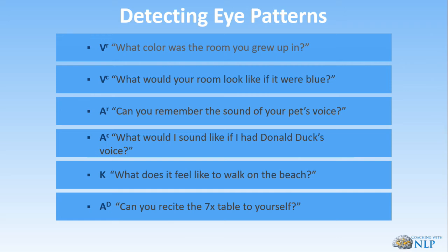They actually tried to debunk the eye patterns. They were at the Pentagon and asked generals: 'What was the color of the room that you grew up in?' The generals actually went down into the AD first and then into their visual recall, so they said 'this is a load of rubbish' — the client didn't go to visual recall. But actually they kind of proved the eye patterns, because what do generals normally do? They're really good at giving instructions and orders. They were giving themselves the order: 'What was that room I grew up in?' — repeating the order and then going to visual recall. That's an AD-VR synesthesia — a two-step process.